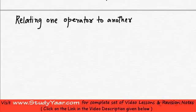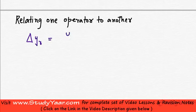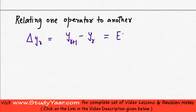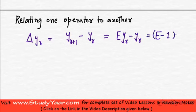Let's now learn how we can relate one operator to another. We have seen our delta operator. What is delta YR? Delta YR is YR plus 1 minus YR. And what is YR plus 1? YR plus 1 is the shift operator E being operated on YR. So you have E·YR minus YR, which is equal to (E minus 1)·YR. So essentially, delta is equal to E minus 1.